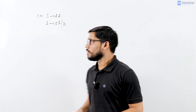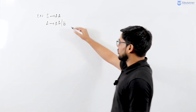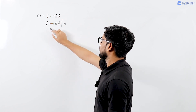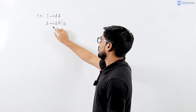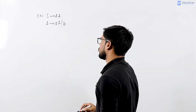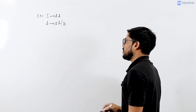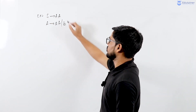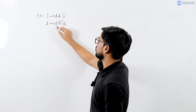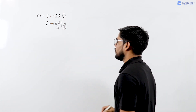Hi everyone. Let us consider this grammar: S derives capital A, A derives small a capital A, or small b. In this grammar I have 3 productions: this is production number 1, production number 2, and production number 3.